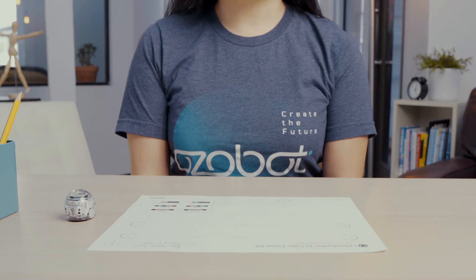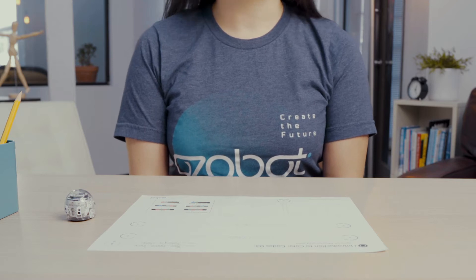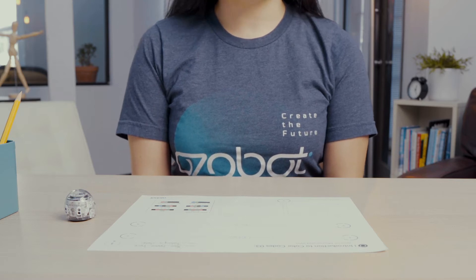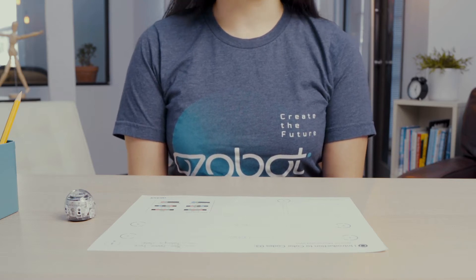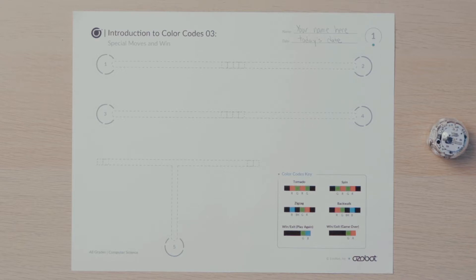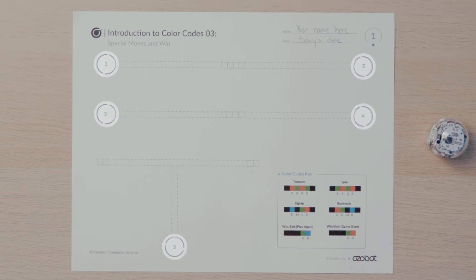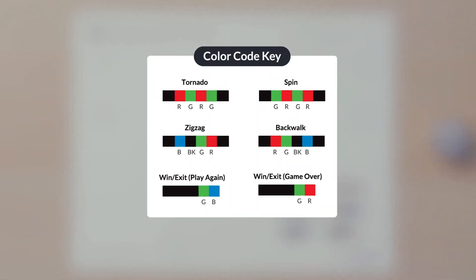Are you ready to start programming your bot to observe different actions? Great, let's get started. Look at your special moves and win activity sheet. Notice there are five different places for your bot to start from. Can you find the color codes key? Notice there are six different color codes in the key.